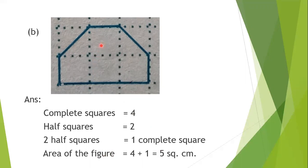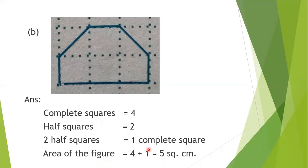See here — how many complete squares are there? One, two, three, four — it covers four complete squares. Now how many half squares are there? One, two — it also covers two half squares. Two half squares make one complete square. So the area of the given figure will be four plus one — five square centimeters.